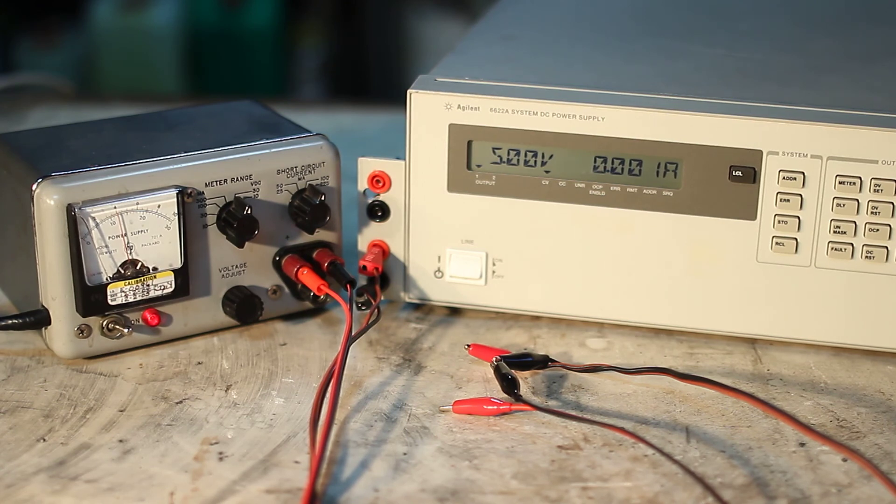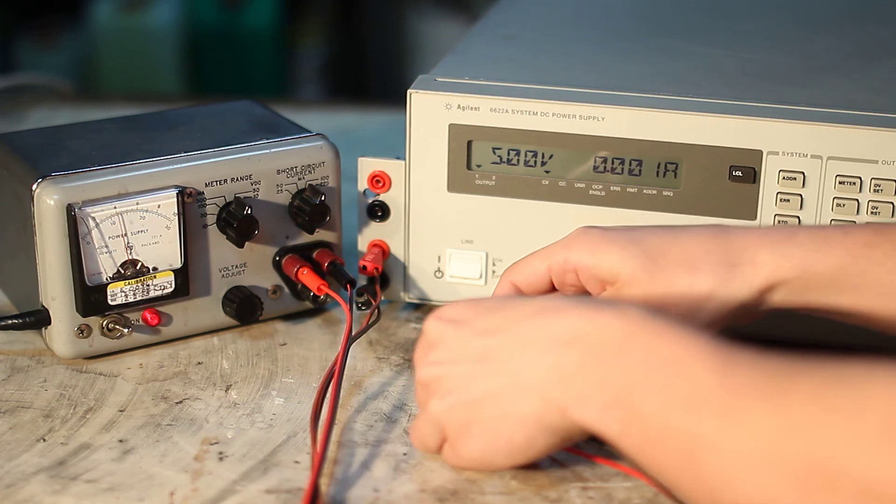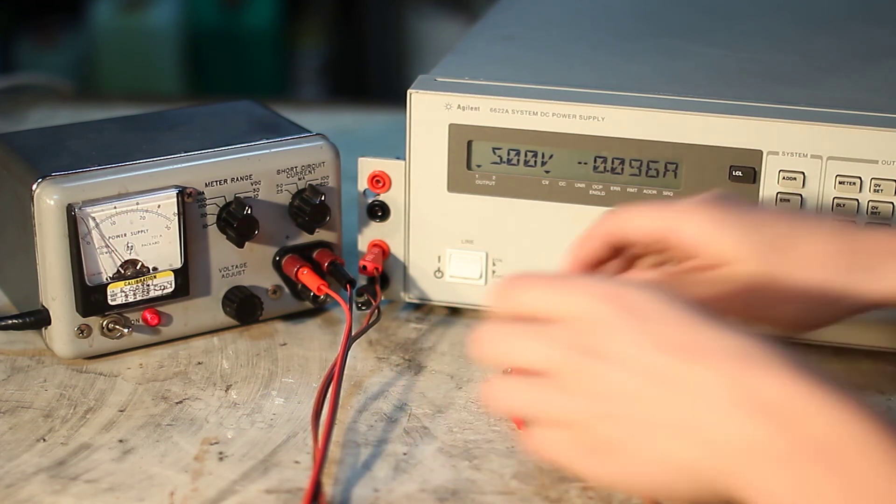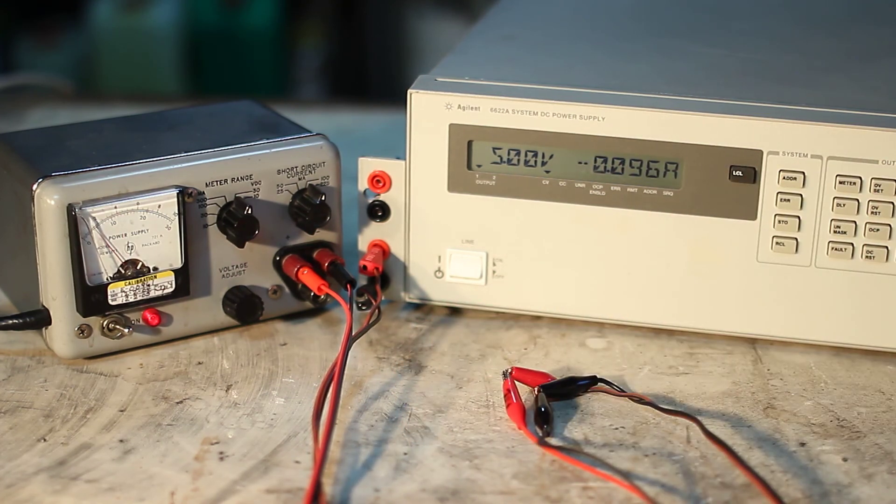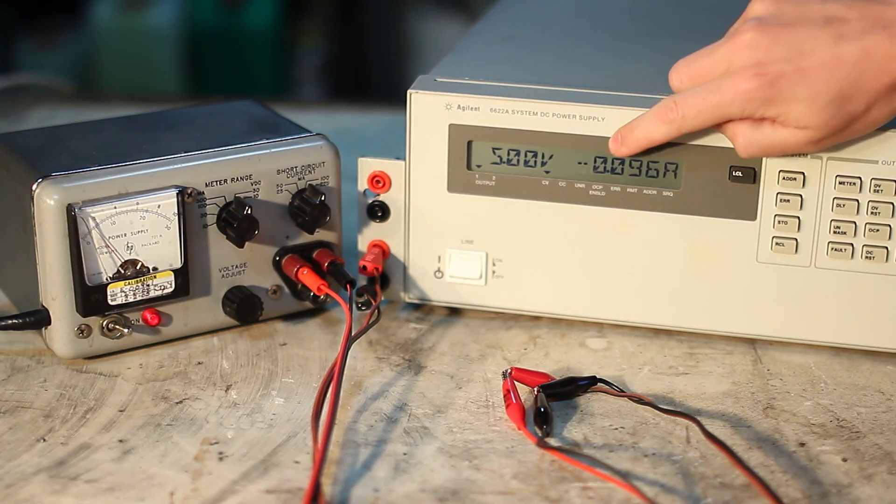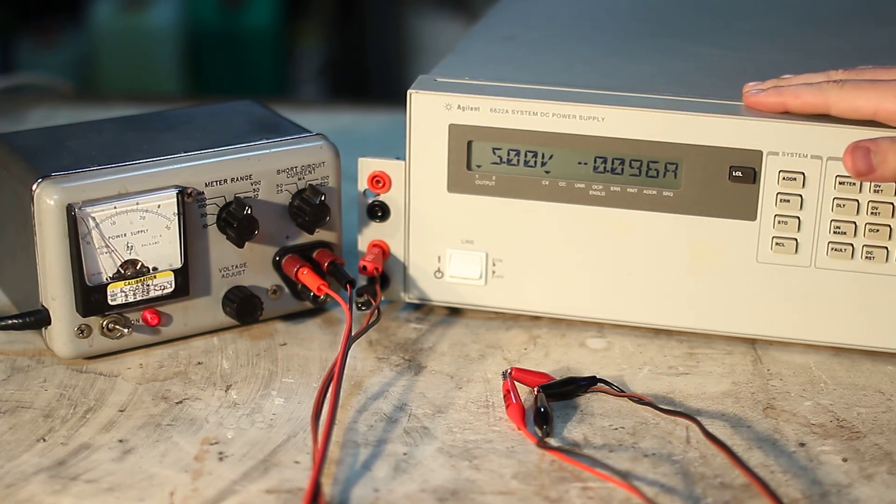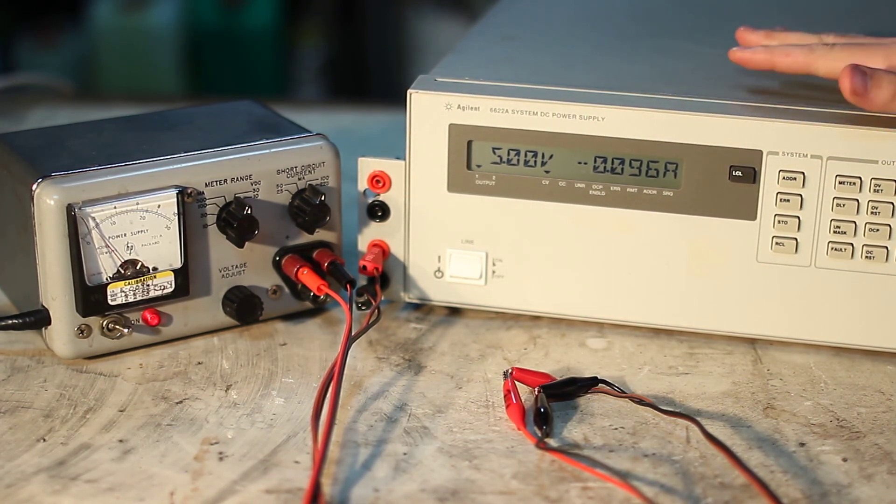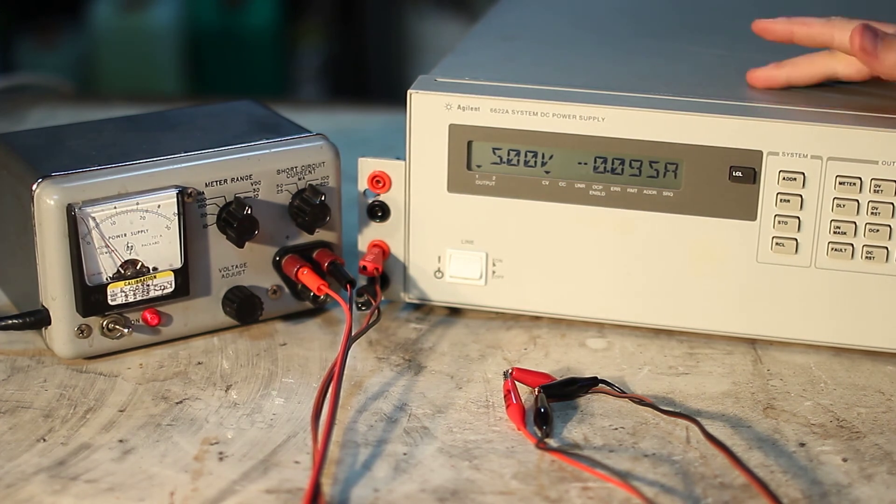If we connect both together, the HP622 forces the HP721 to be in constant current mode and sinks, hence the negative sign, 100mA from the other supply. That's a curious feature of this type of system power supplies.